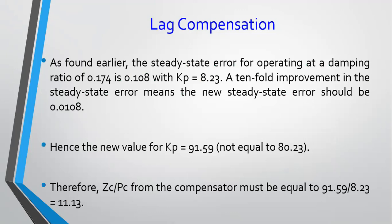The question is about a reduction of the steady-state error by 10. A tenfold improvement means the new steady-state error should be 0.0108 — you just divide by 10. But be careful: this does not correspond to an increase by 10 of your Kp, because for the position error constant it's 1 over (1 + KP), so the relationship is not proportional. From this new steady-state error of 0.0108, you can work out a new Kp using steady-state error = 1 / (1 + Kp) = 0.0108, giving a new Kp of 91.59.